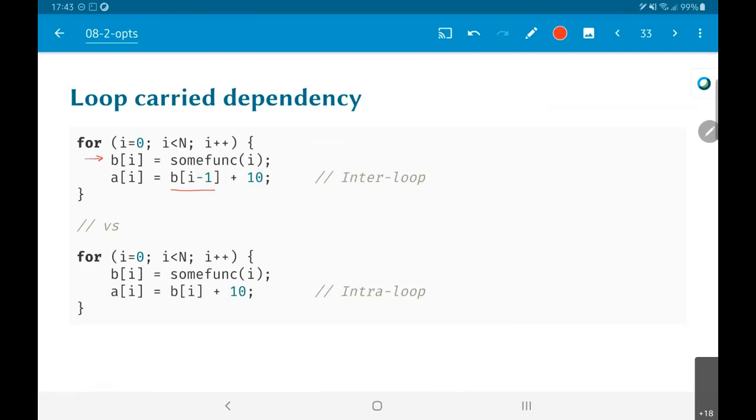updated in a previous iteration of the loop. So there's clearly a dependency—a[i] does depend on b, but it depends on b from a previous iteration. You can think of this as having a one sample delay between the production of b and its consumption by a. We call this an inter-loop iteration,